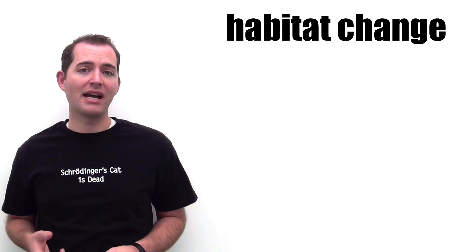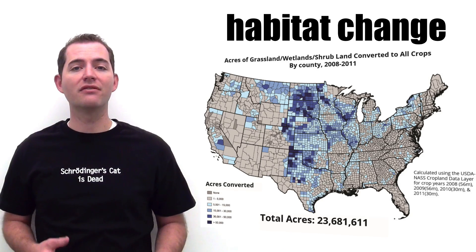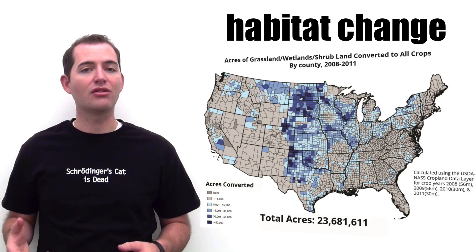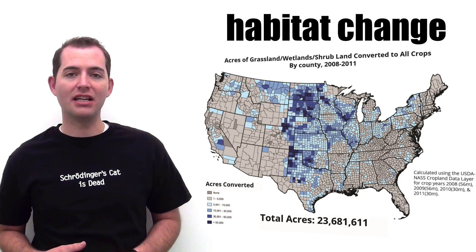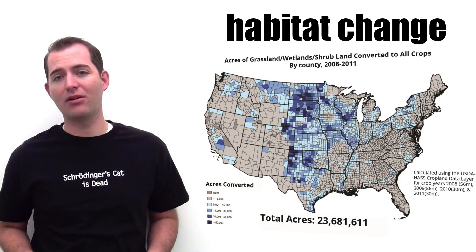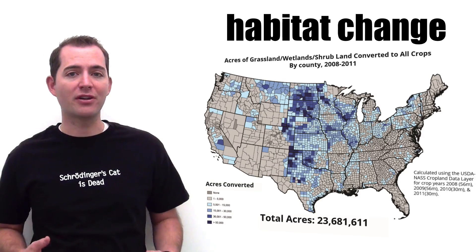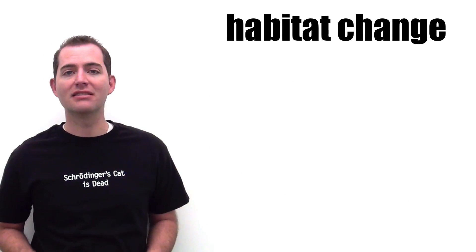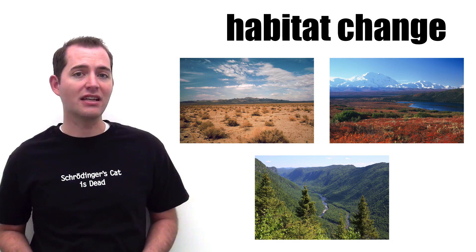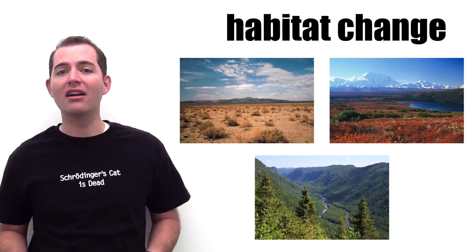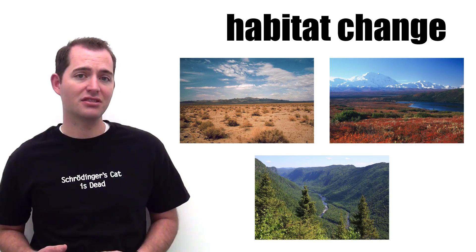One of the largest impacts of habitat change has been the conversion of land to crop use. This type of habitat change has taken place across the entire world, and only places that are unsuitable for crops, such as deserts, boreal forests, and tundras, have remained primarily unimpacted by this type of habitat change.